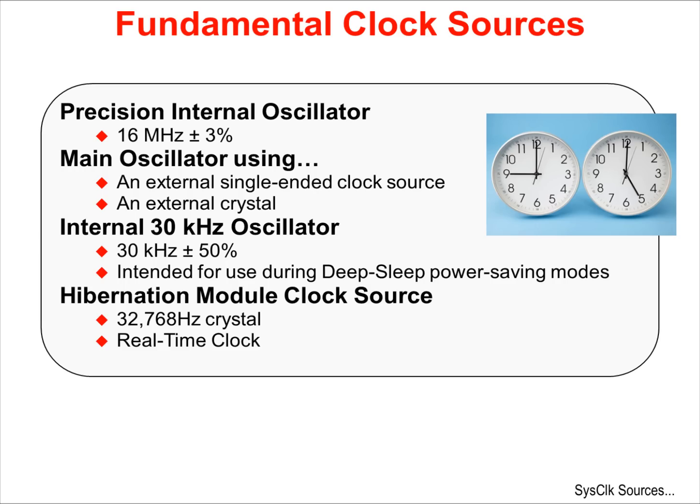This sounds terrible, but this oscillator is intended for use during deep sleep and power saving modes where the actual clock speed is irrelevant to the function of the code. Last is the hibernation module clock source, which requires an external clock crystal or oscillator. The clock provides the system with a real-time clock source.